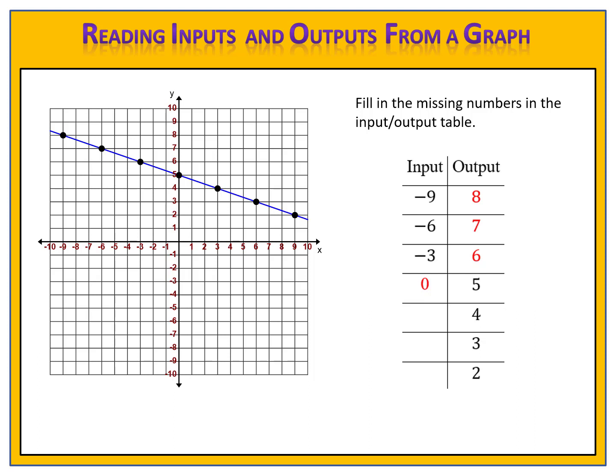It takes a little practice to get good at this, so let's try another one. In the next exercise, we're told that the output is 4 and we want to find the input. That means we have a point on our graph where the y value, the output, is 4. The output is 4, so we draw a line across our graph where y, or the output, is 4. Where does this line cross our graph? At this spot right here. Draw a line down and that will tell you the input. The input is 3, and the point on the graph is 3, 4. Therefore, when the output is 4, the input is 3.